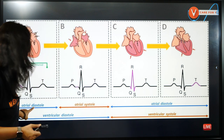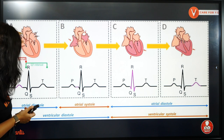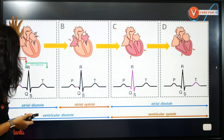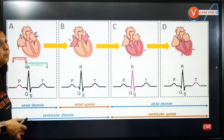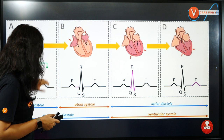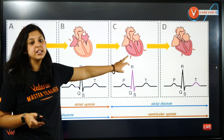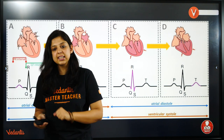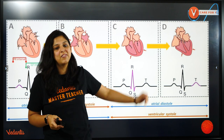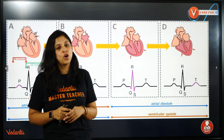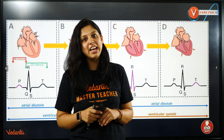Let's recap: atrial contraction is happening — atrial systole. Blood is coming to the atria, the atria contract, and the blood moves forward. When the ventricles relax — between S and T — the ventricles begin to relax. By the T wave, the ventricles have completely relaxed after contraction. I hope you have been able to understand every single thing.